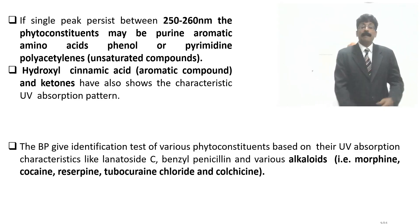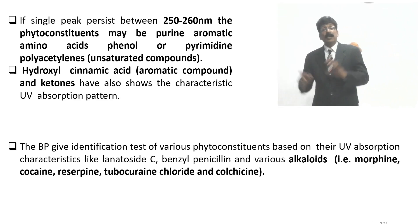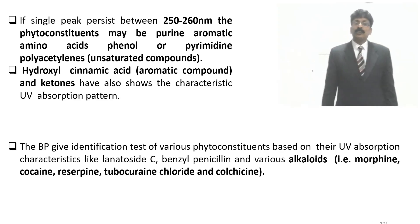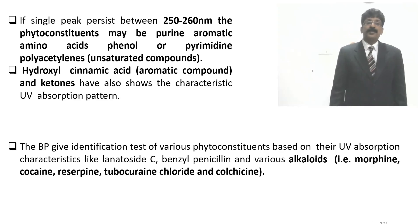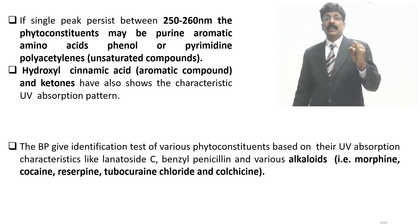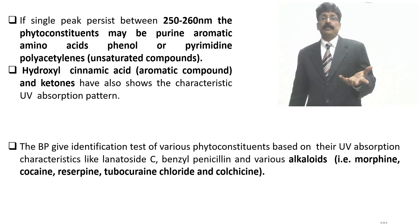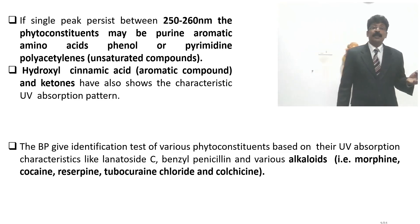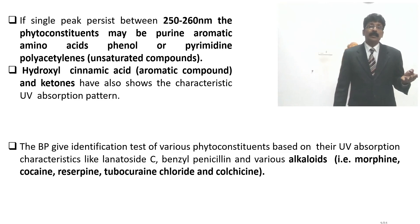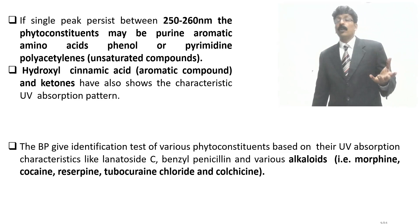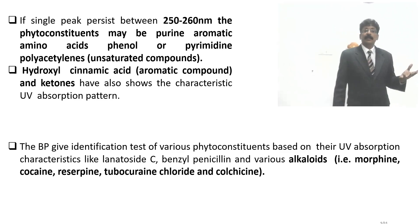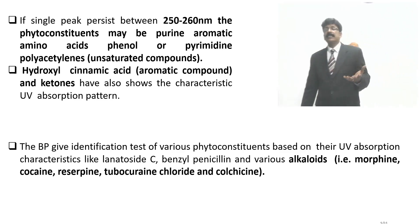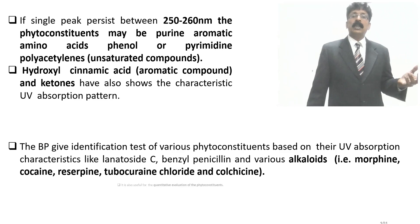The British Pharmacopoeia gives identification tests for various phytoconstituents based on UV absorption characteristics. Examples include lanatoside C, benzylpenicillin, and various alkaloids like morphine, cocaine, reserpine, tubercurarine chloride, and colchicine. These are some of the alkaloids identifiable by UV spectroscopy.